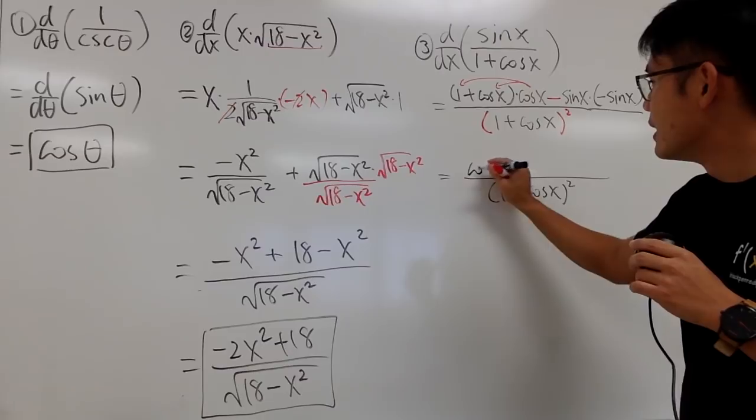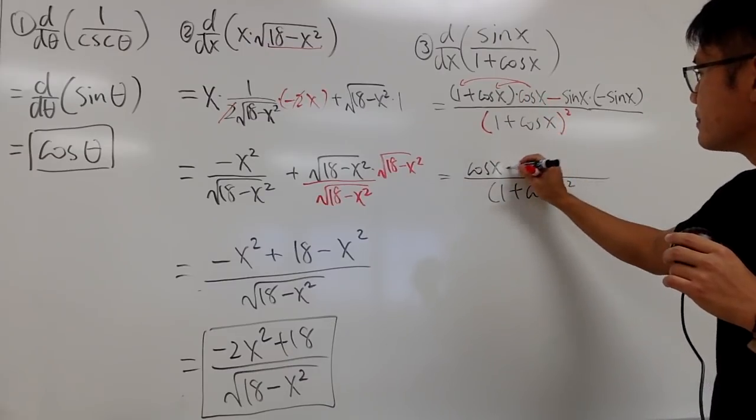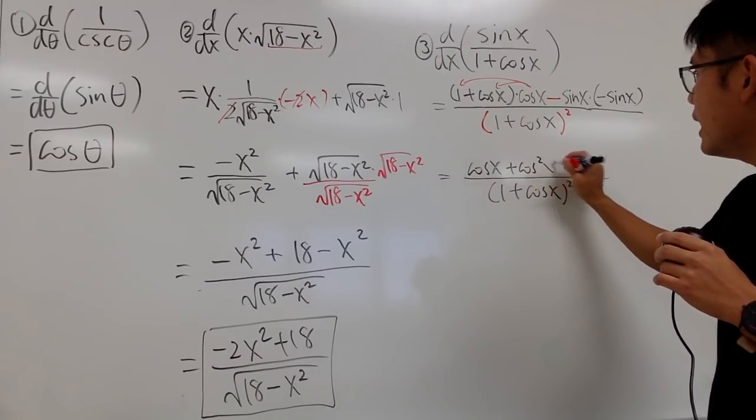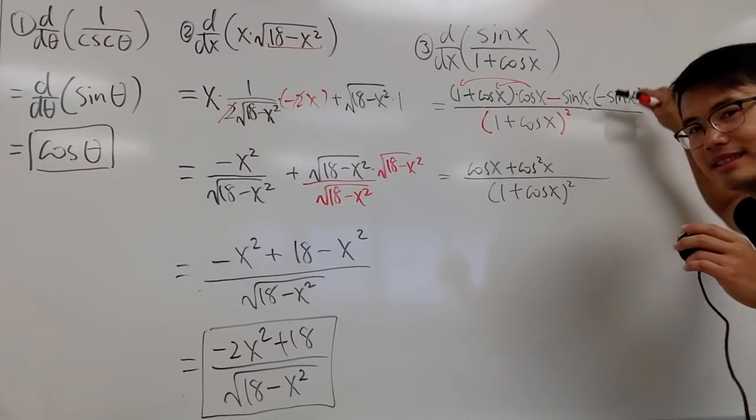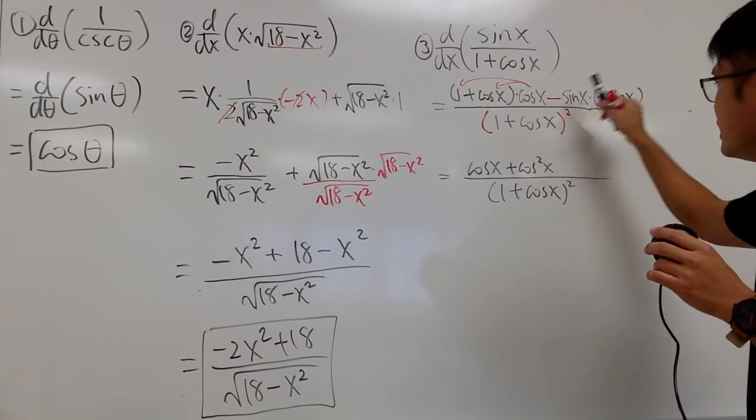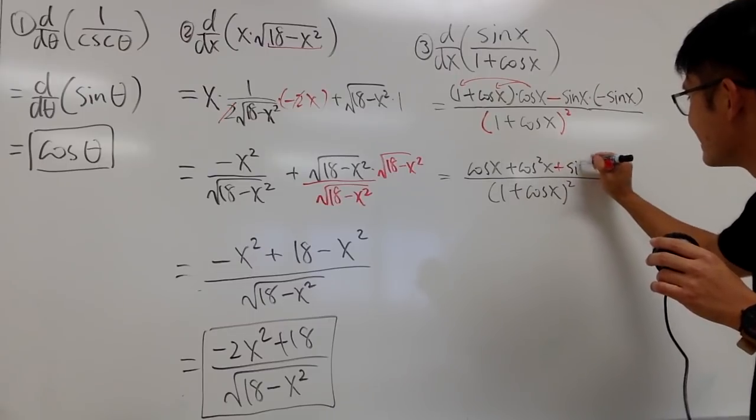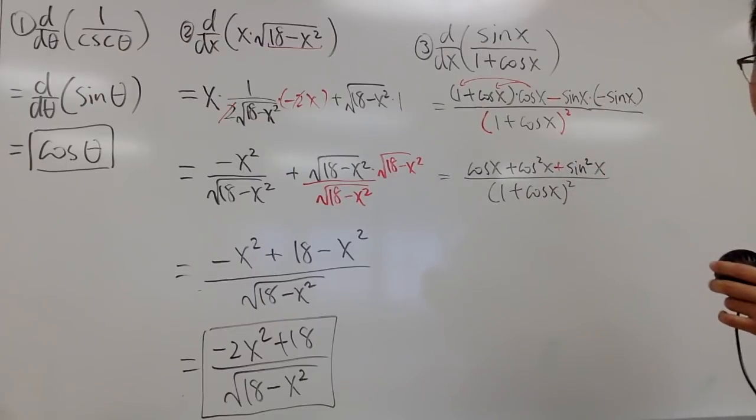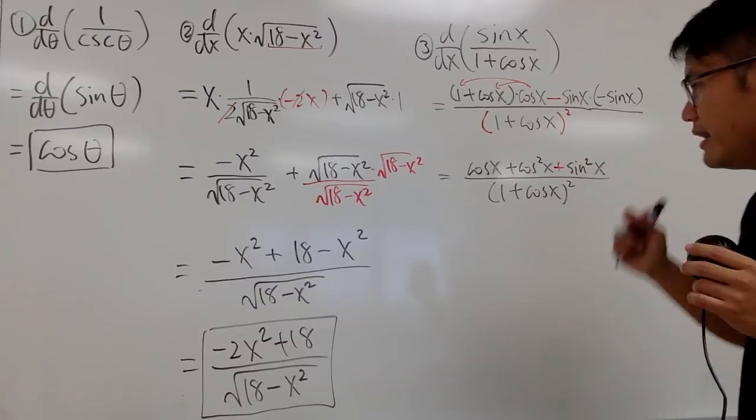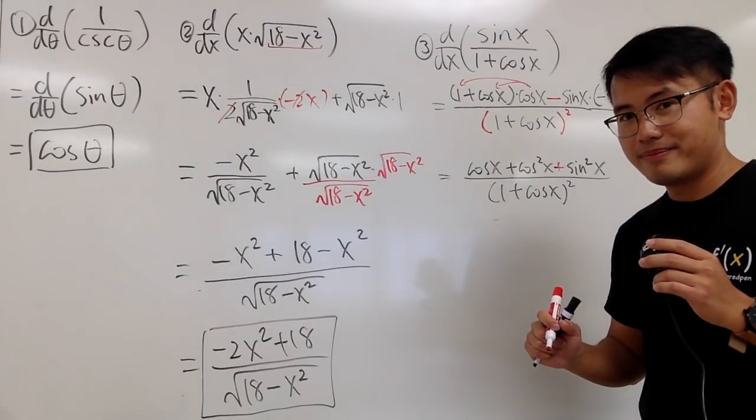This times this is cosine x. This times this is plus cosine squared x. And, then, this times that. Negative times negative, just like the good old days. It's plus sine squared x. And, now, is there anything that we can do? Notice.